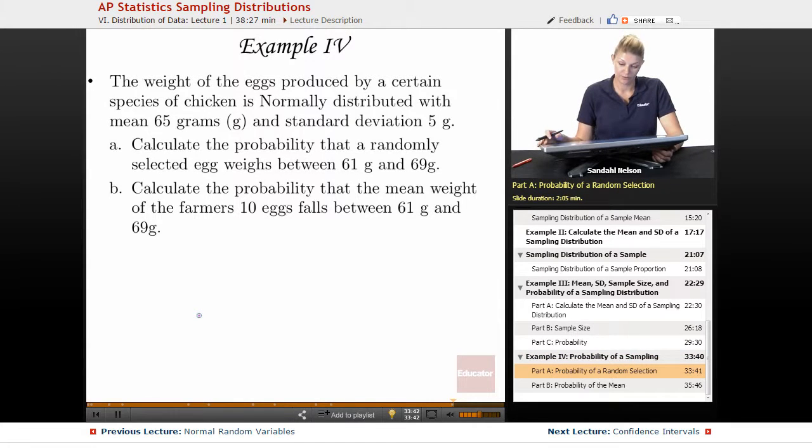Okay, so let's do another one. We've seen this setup before. We know that the weight of the eggs produced by a certain species of chicken is normally distributed with a mean of 65 grams and a standard deviation of 5 grams.